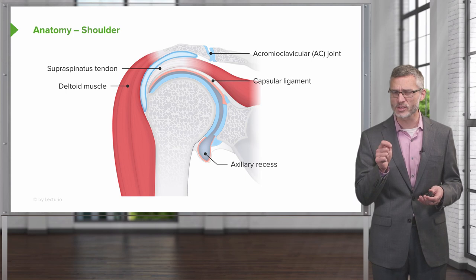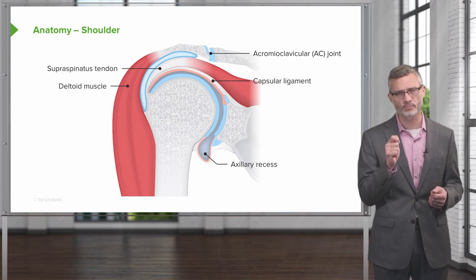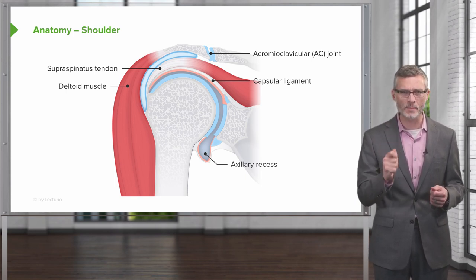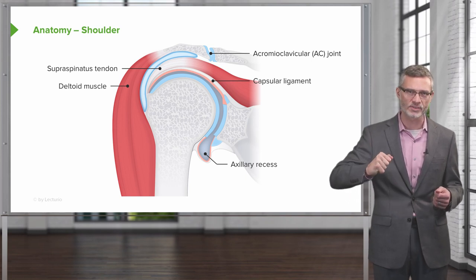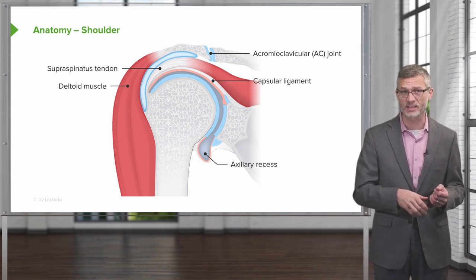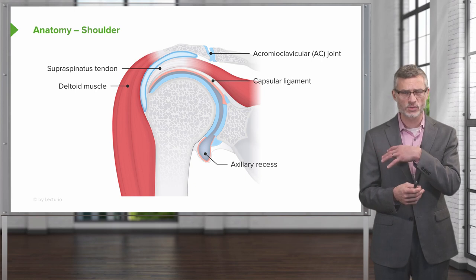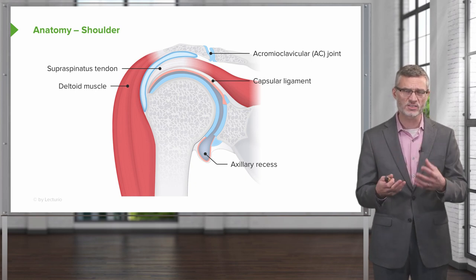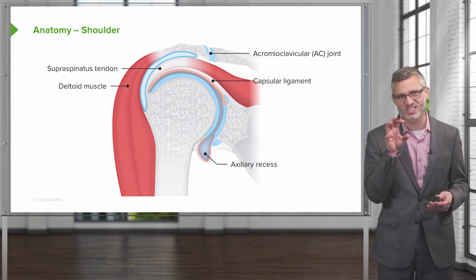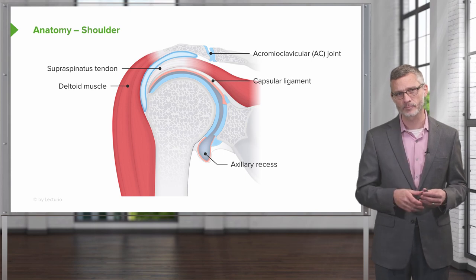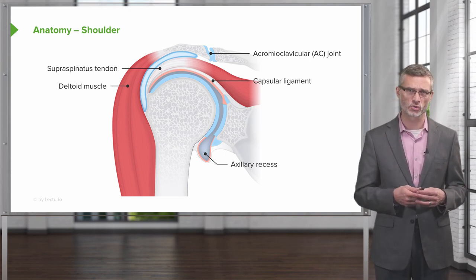The deltoid muscle is really the prominent mover and shaker for getting your arm around and having strength to lift things over your head. The supraspinatus, infraspinatus, and the rest of the rotator cuff muscles are designed for stabilizing the humeral head and stabilizing your shoulder joint.